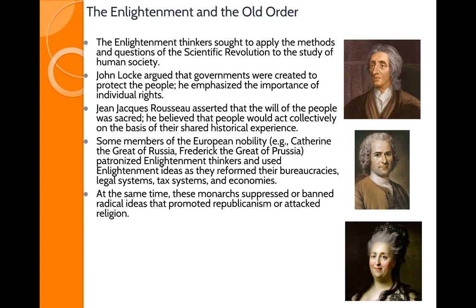Some members of the European nobility, such as Catherine the Great of Russia and Frederick the Great of Prussia, patronized Enlightenment thinkers and used these ideas to reform their bureaucracies, legal and tax systems, and economies. At the same time, these monarchs suppressed and banned truly radical ideas that promoted republicanism or attacked religion. However, too many channels and means of communication remained open to permit any real or lasting suppression of ideas — what they really worried about was full independence and people rejecting religious authority.